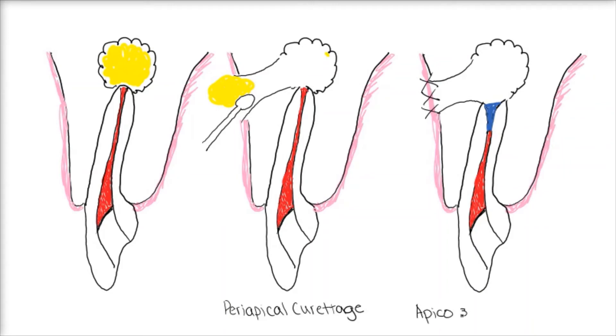So, here we have periapical curettage, and here we have an apicoectomy with a root end filling.